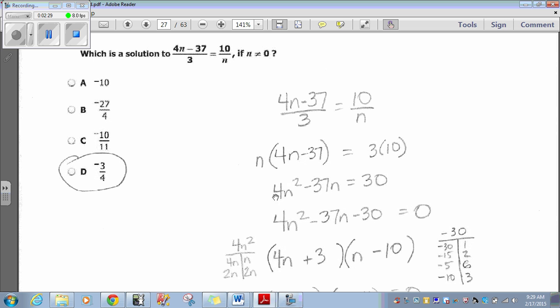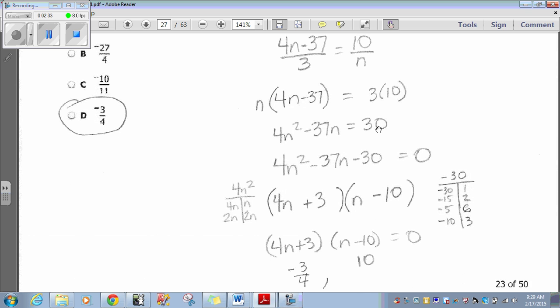Distribute the N. 4N squared minus 37N equals 30. Then, I would subtract 30 and 0. At this point, you could either use quadratic formula to find your answers. Or if you're familiar with factoring, then you could factor. In this case, I'm factoring here.